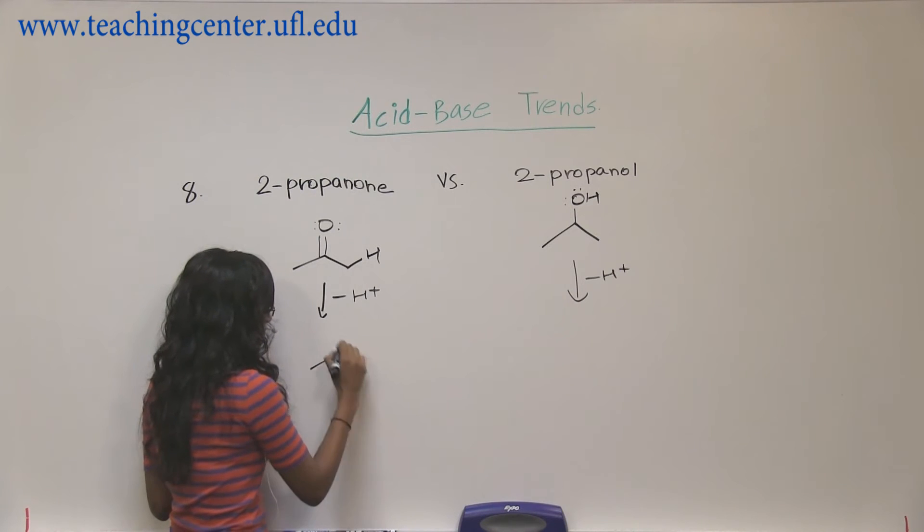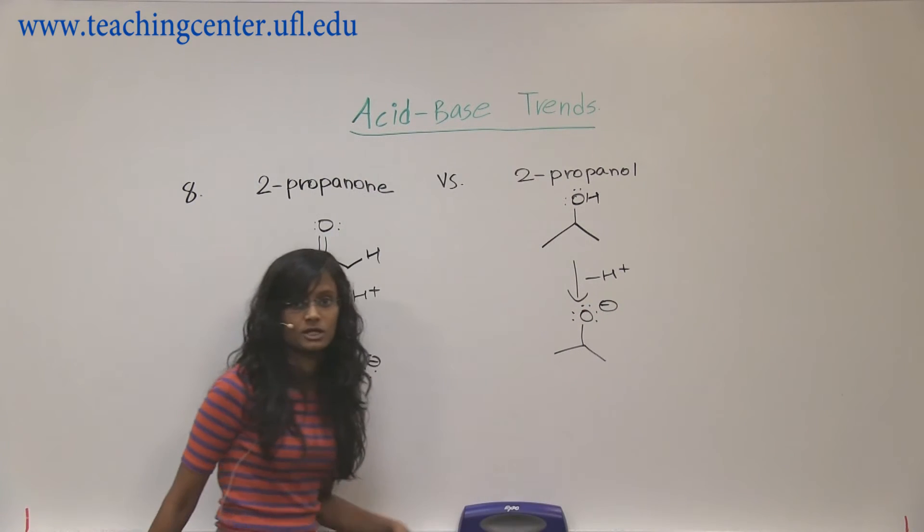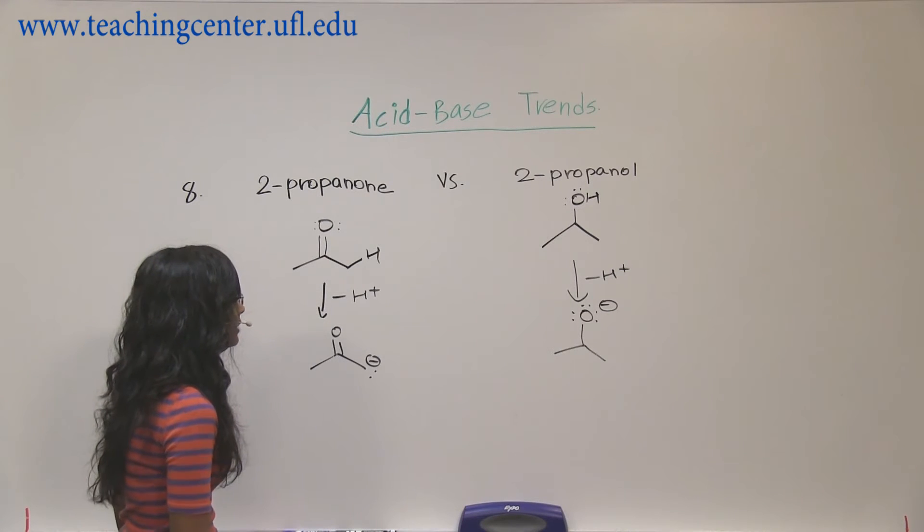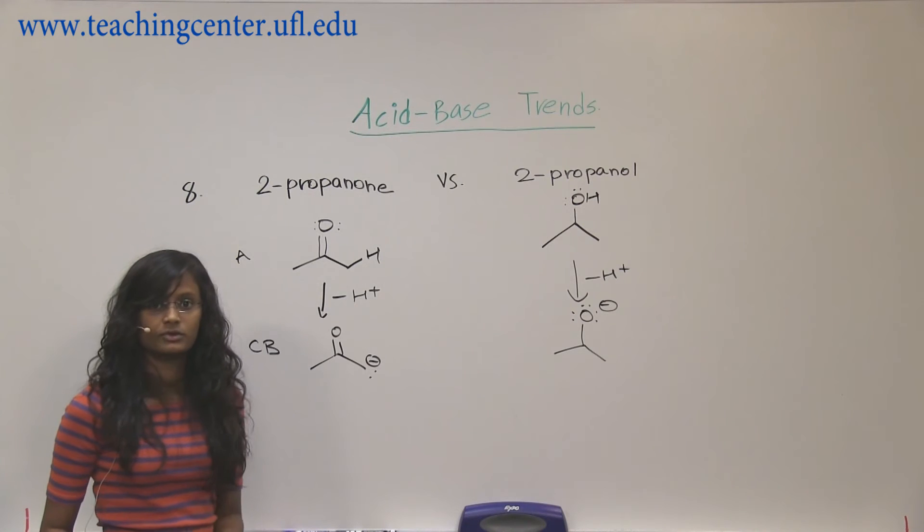So when they lose it, carbon becomes negative charge and here, oxygen is going to get a negative charge. Okay, so these are acids, conjugate base, we're trying to find the most stable one.